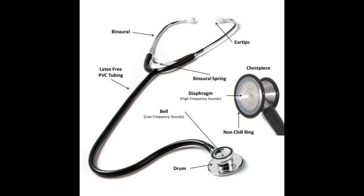The third part is the bell. The bell is the smaller circular end of the chest piece. It focuses on a narrower range — lower frequencies of sounds that may not be easily detected by the diaphragm. The bell is most effective at transmitting lower frequencies, while the diaphragm is most effective at transmitting higher frequencies.